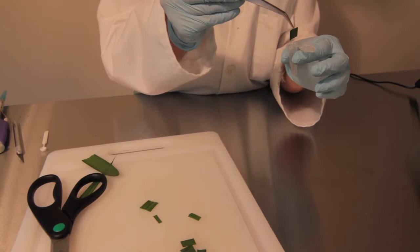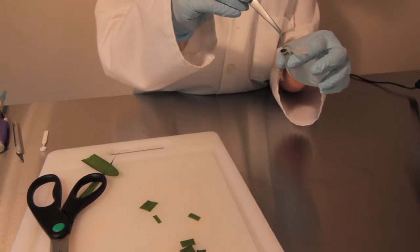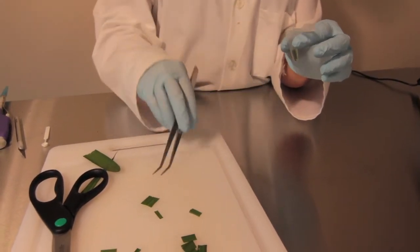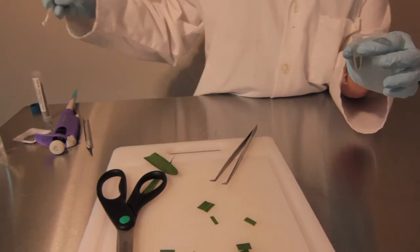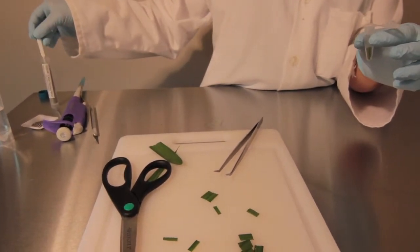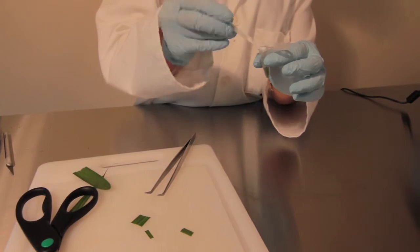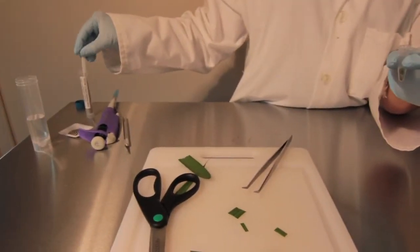When loading your samples into the tube, make sure that you don't stuff them into the bottom, or else the sample may get jammed in there and prevent proper homogenization. Instead, gently push your sample in and make sure it's not pressed up against the side of the tube.